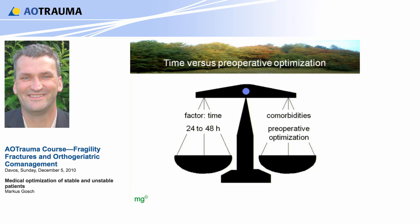Step one: ask the patient what happened. It's a very simple question, but it's very important, because maybe you get two important answers. One answer is the patient didn't know what happened, so maybe she suffers from dementia or she's already in a delirium. The second point is: what was the cause of the fall? You have to think of a syncope — a brief loss of consciousness. Only 10% of all falls are caused by a syncope, but a syncope could be a symptom of a severe cardiovascular and cerebral problem, making problems during and after the operation.